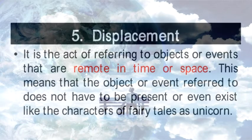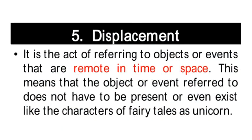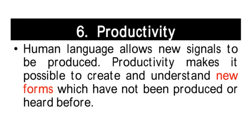The fifth property is displacement. It is the ability to refer to objects or events that are remote in time or space. This means that the object or event referred to does not have to be present or even exist, like the character of fairy tales such as the unicorn.